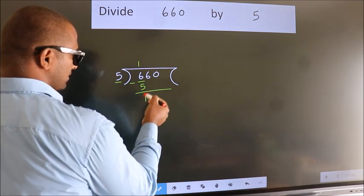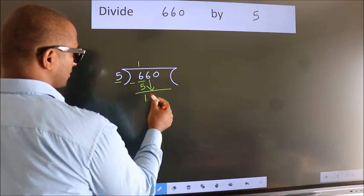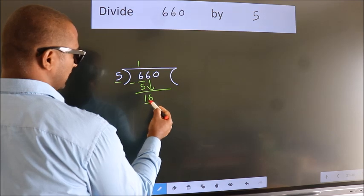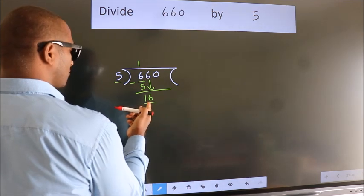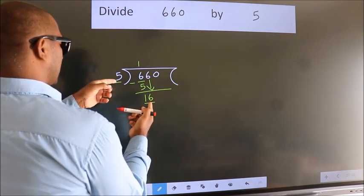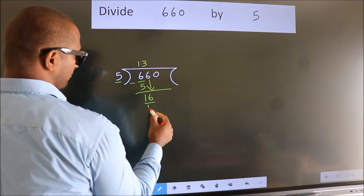After this, bring down the beside number. So 6 down. So 16. A number close to 16 in 5 table is 5 3s 15.